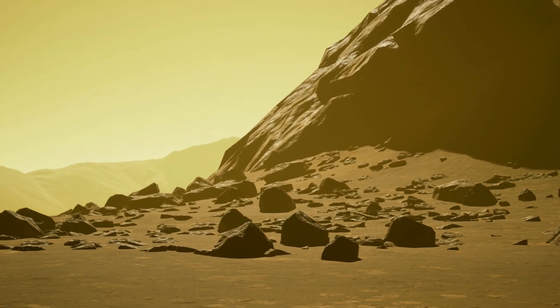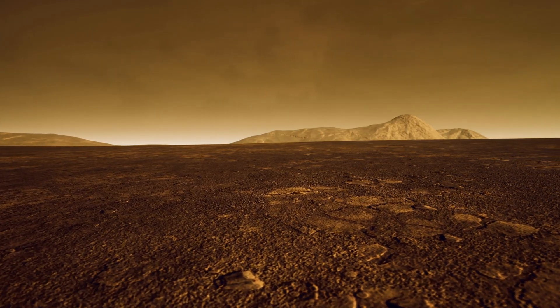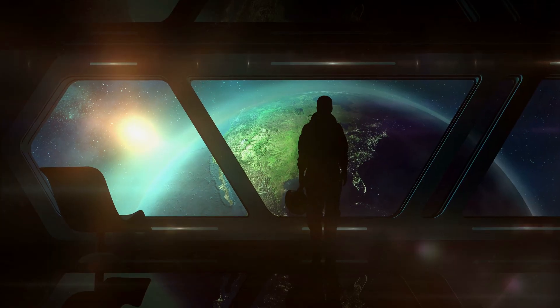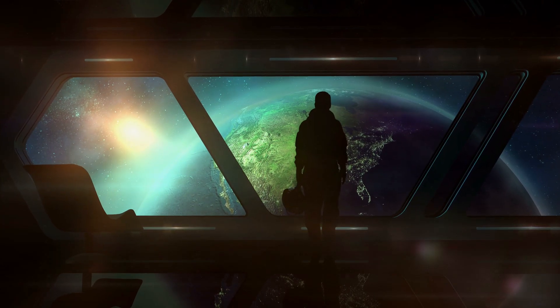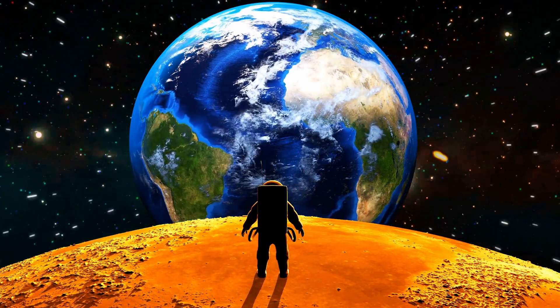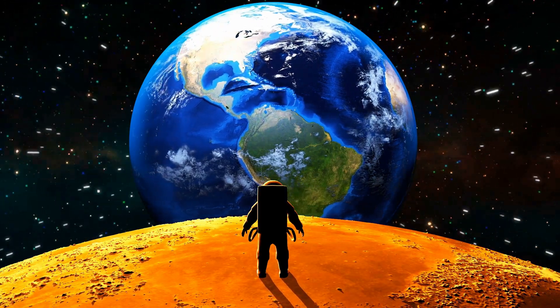So, to recap, Venus is hot, angry, backward-spinning, acid-raining, and somehow, still mysterious. Would you go there? Let us know in the comments. And remember, if you're packing for Venus, bring sunscreen, a reinforced pressure suit, and maybe an escape plan.